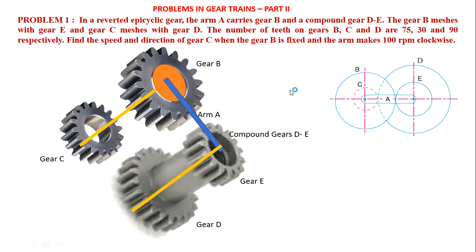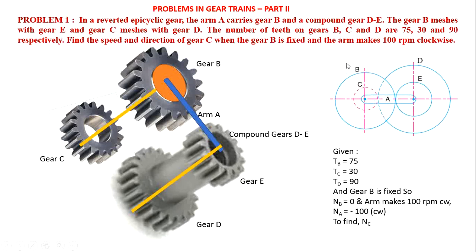Now we will go to the problem. What is given? Number of teeth on B is 75, number of teeth on C is 30, number of teeth on D is 90. Gear B is fixed and arm makes 100 RPM clockwise. Therefore, speed of gear B, NB = 0. Speed of arm NA = minus 100, since we assume anticlockwise is positive, clockwise is minus. So NA = minus 100 clockwise.